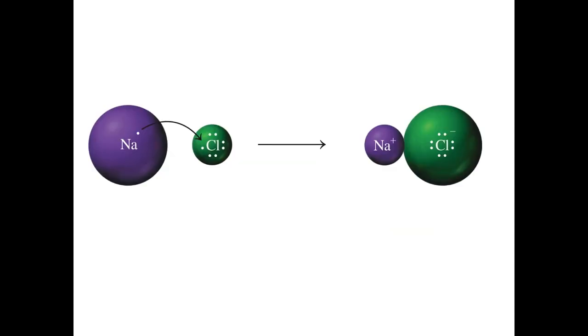So to illustrate this point, let's take a look again at sodium and chlorine combining together in an ionic fashion. When sodium gives away its electron to chlorine, sodium becomes a positive ion. And when chlorine receives that electron from sodium, chlorine becomes a negative ion.